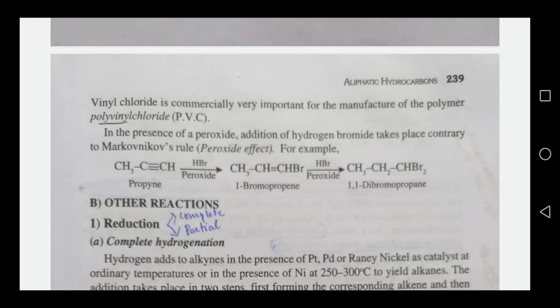Vinyl chloride is used in manufacturing polyvinyl chloride, or PVC. When HBr is used with peroxide (the HBr peroxide effect), it gives anti-Markovnikov products. The product formed is 1-bromopropene, and with excess HBr and peroxide, 1,1-dibromopropane is formed.